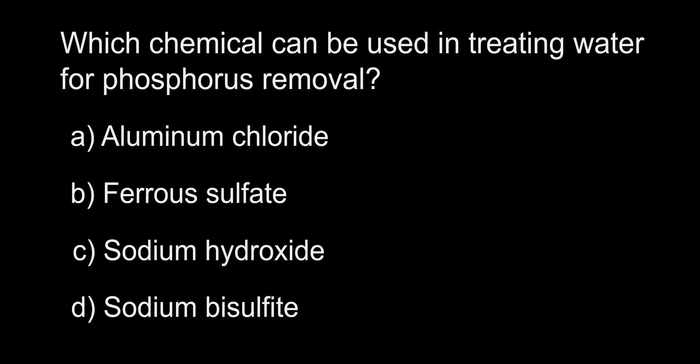Which chemical can be used in treating water for phosphorus removal? A. Aluminum chloride. B. Ferrous sulfate. C. Sodium hydroxide. D. Sodium bisulfite.